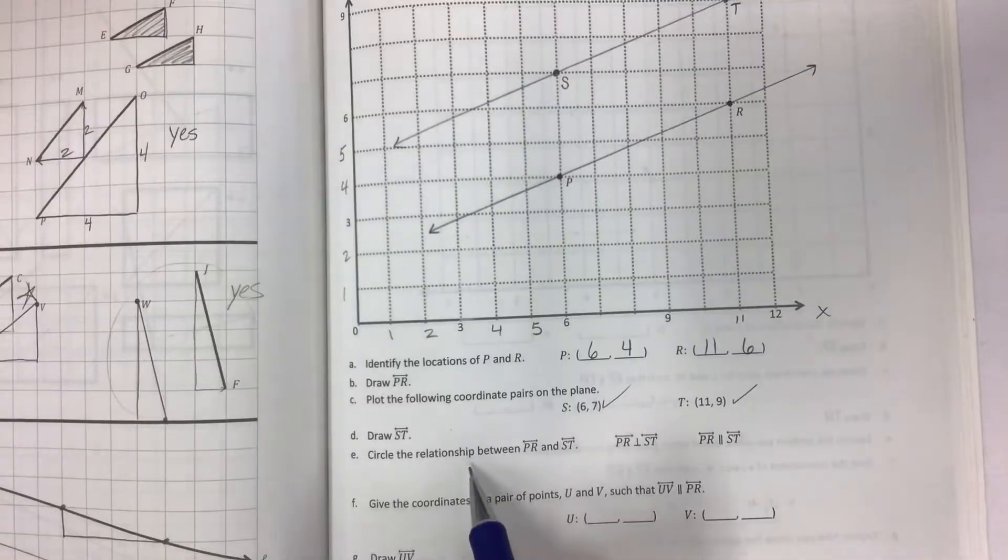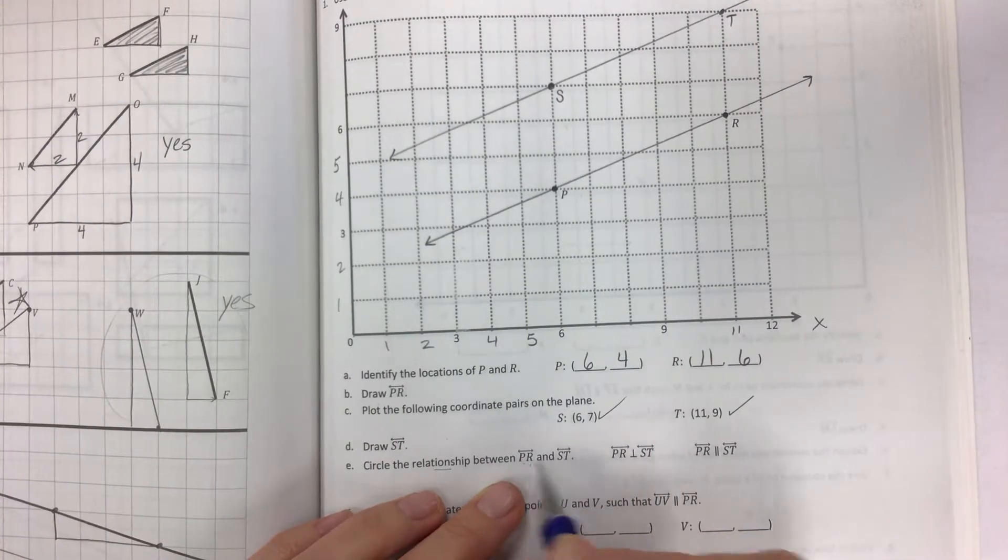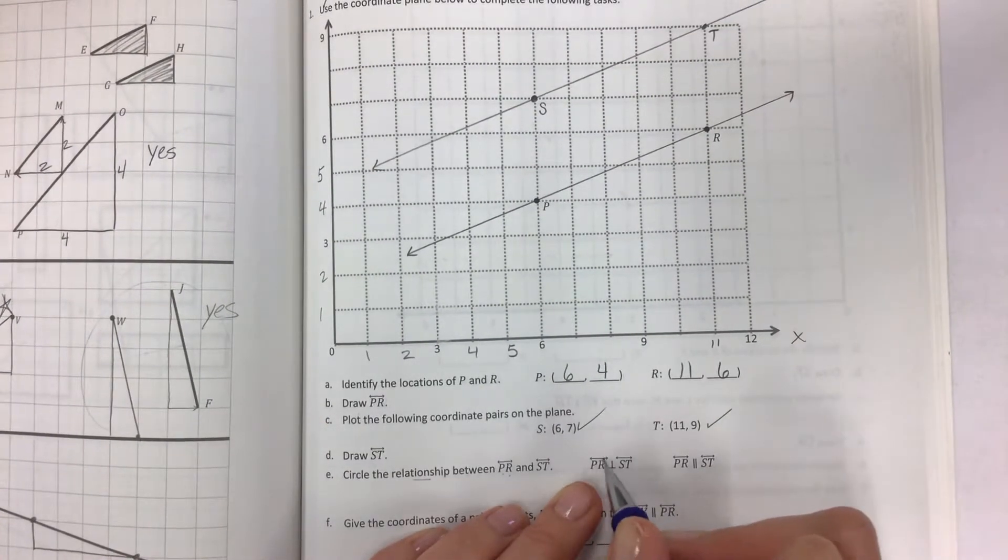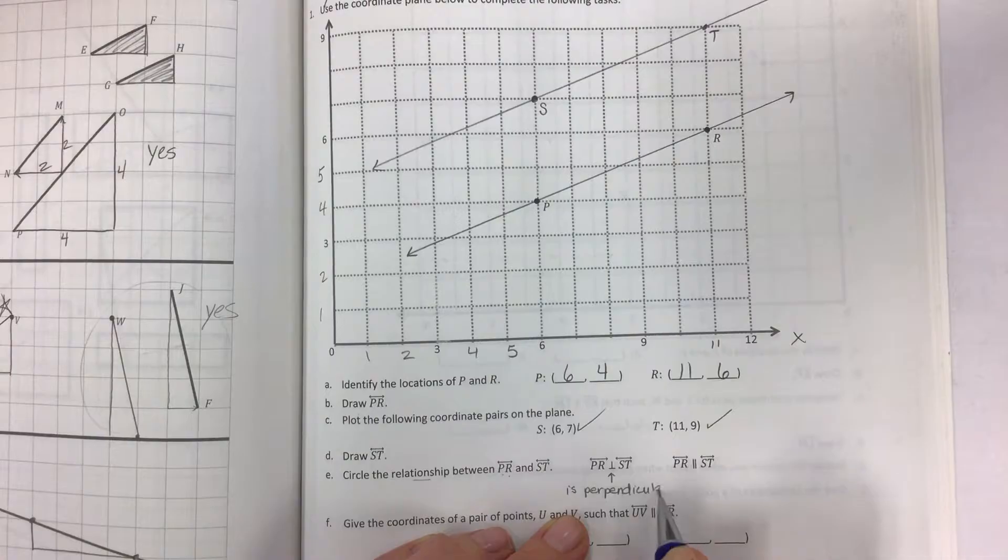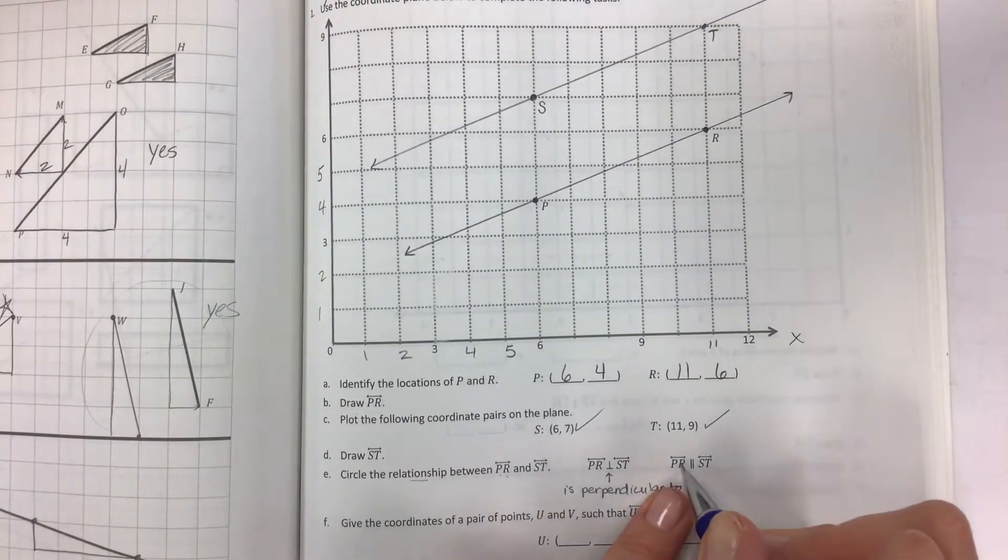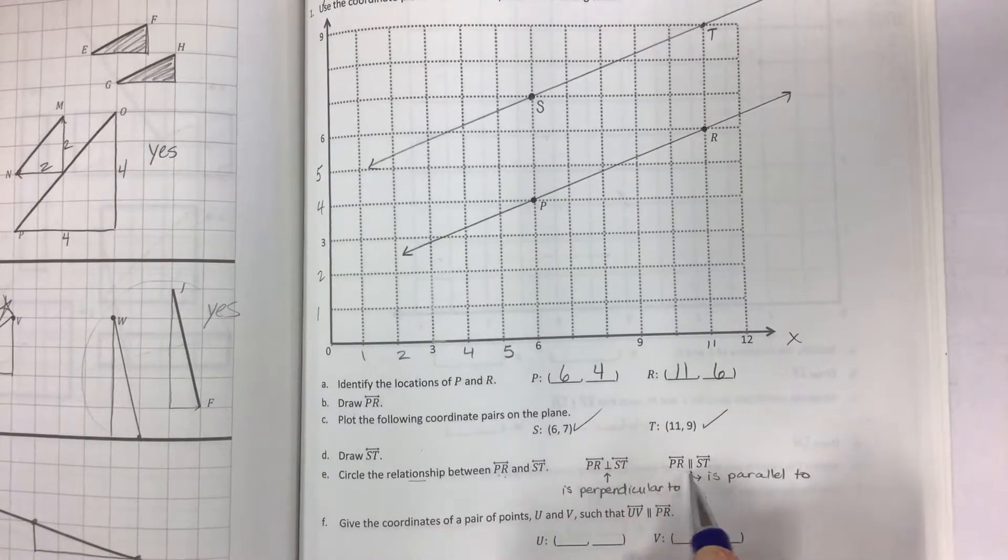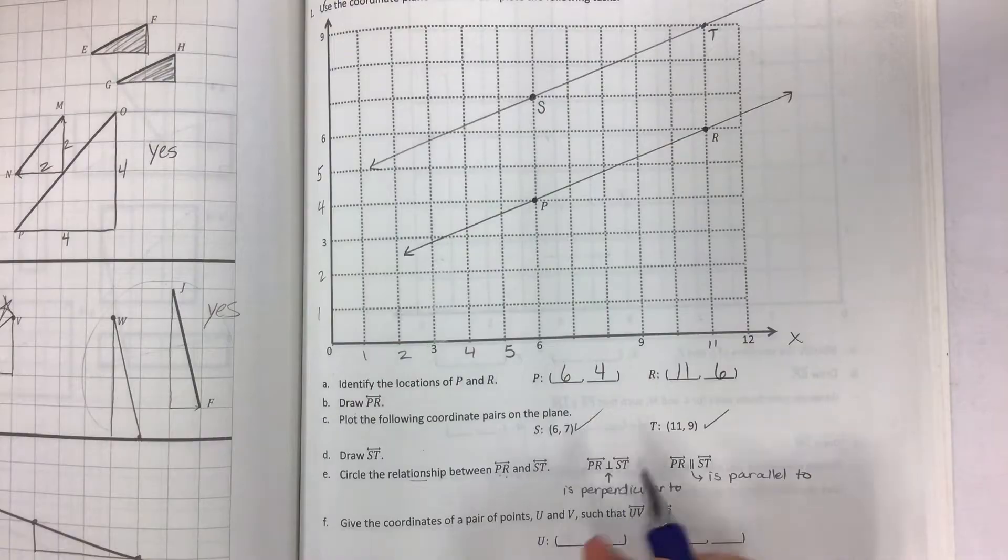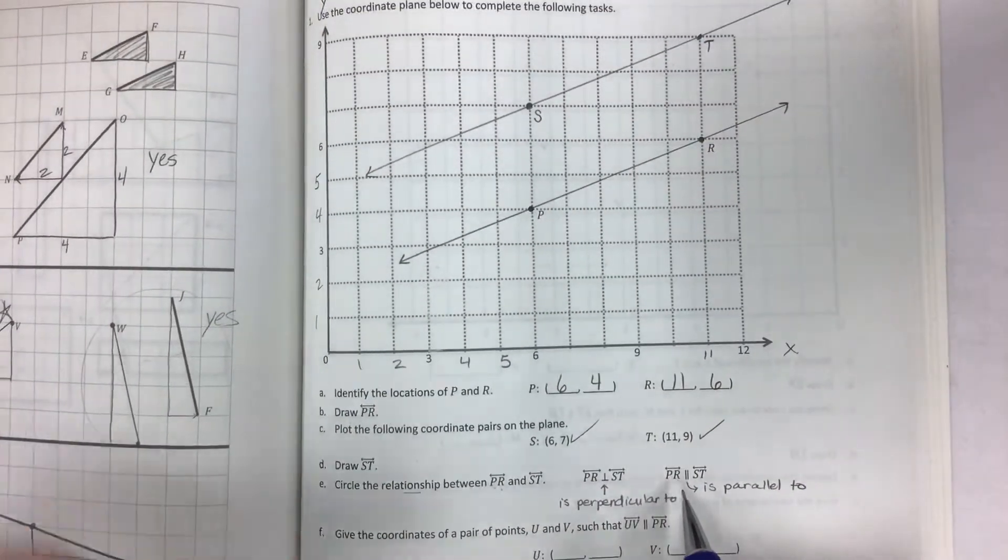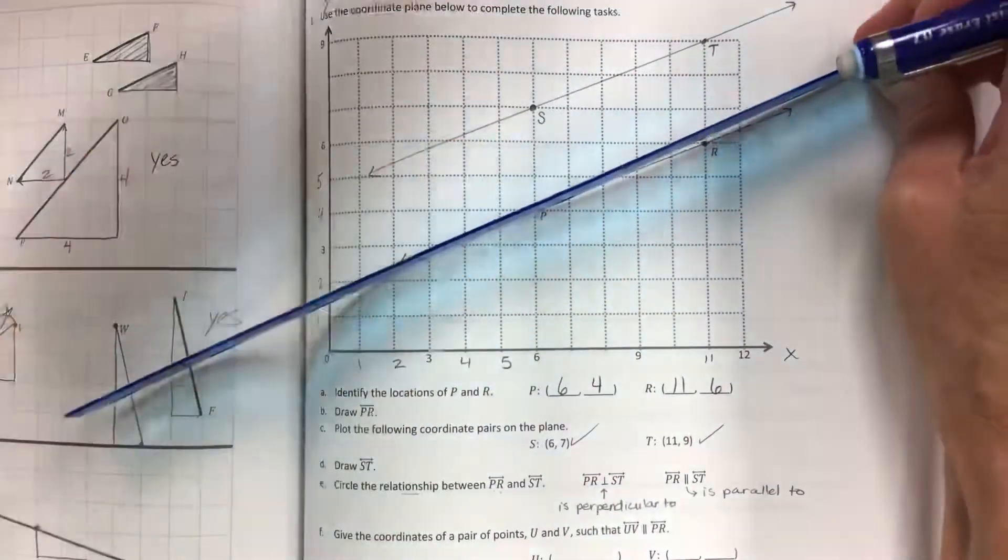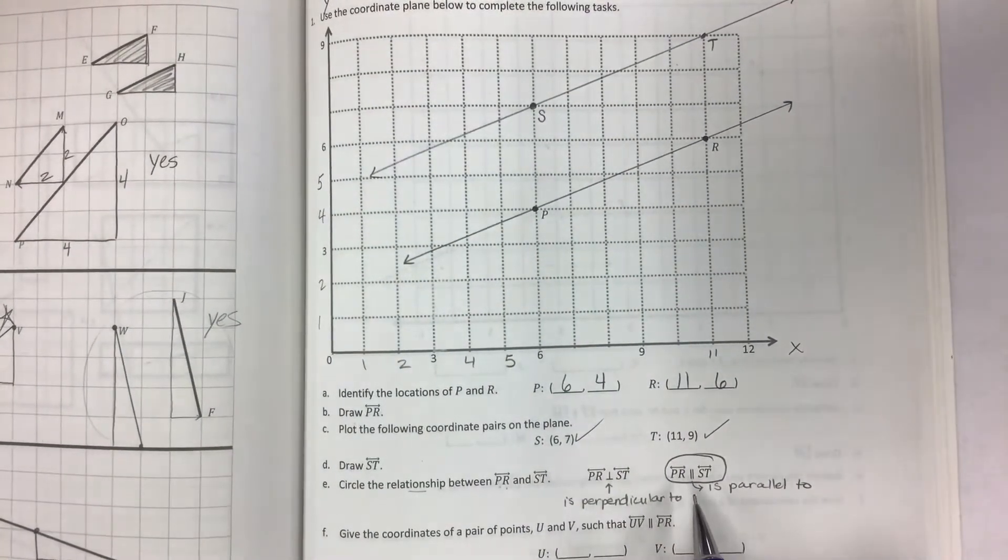Okay, now circle the relationship. This is kind of a little bit of a check for you to look for symbols. Circle the relationship between line PR and line ST. So line PR is perpendicular to line ST, or line PR is parallel to. Okay, so these fun little symbols here are showing you the relationship. If it's perpendicular then it crosses in the crisscross 90 degree angles at the corners. If it's parallel, boom, a pair of L's. So line PR is what to line ST. Here's a line, here's a line. Okay these lines are parallel. So we're going to circle this one because that's the relationship between the lines.